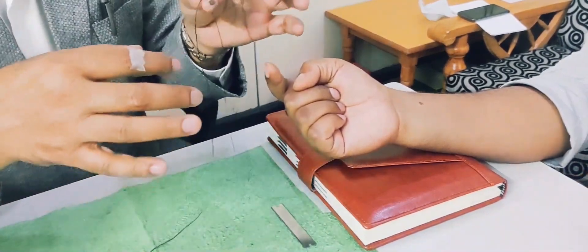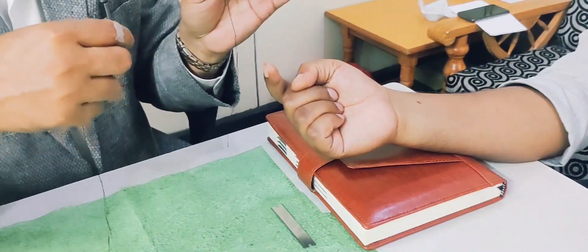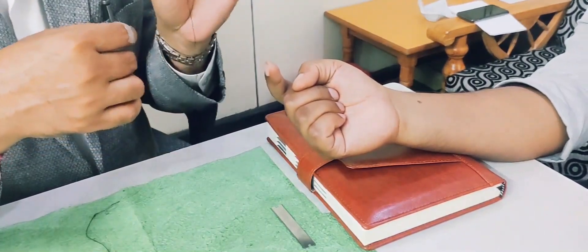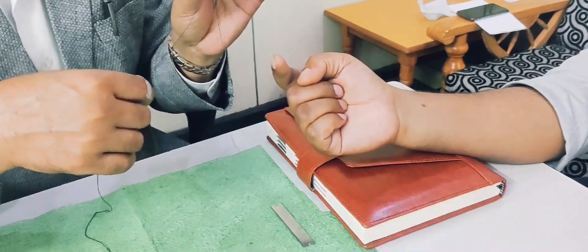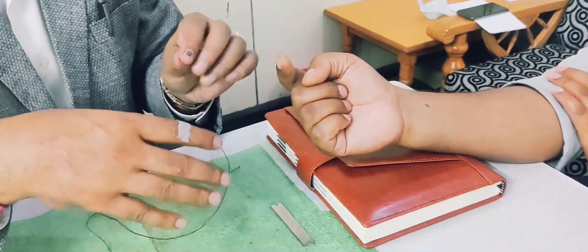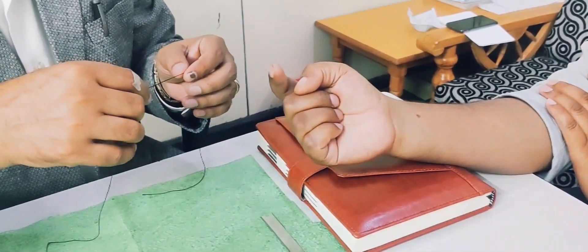Here I am using silk. It is a thick thread, it is non-absorbable which is going to be a knot. Let us start.